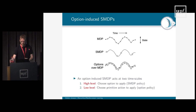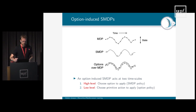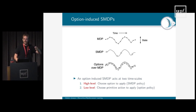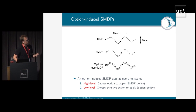Coming back to the idea of local rewards or option-specific reward functions: the hierarchical structure might prevent you from finding the optimal policy for the original MDP. Dietterich already defined two novel notions of optimality for hierarchical reinforcement learning. The first, recursive optimality, means that each option policy is learned optimally given its option MDP definition — each option policy is locally optimal and the SMDP policy is also optimal on top of these option policies. But this does not always correspond to a globally optimal policy.